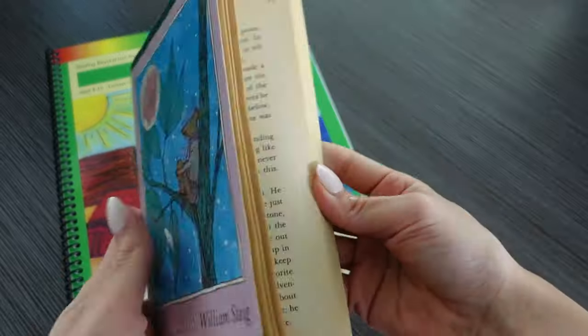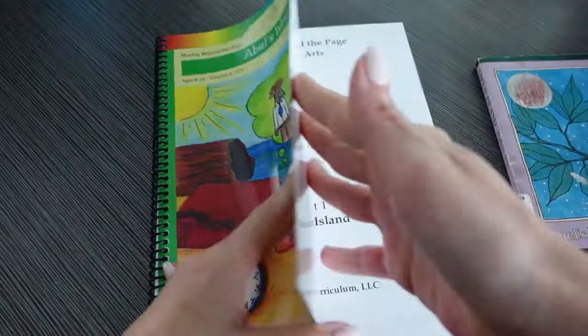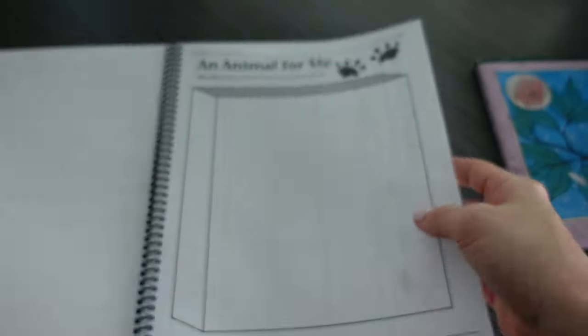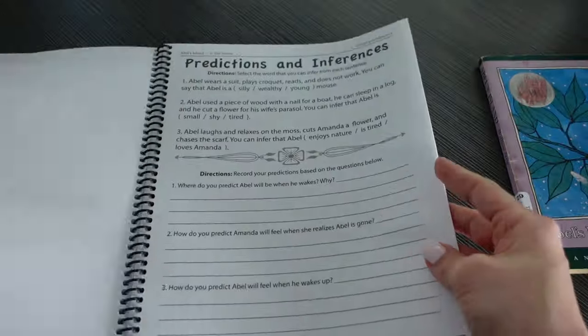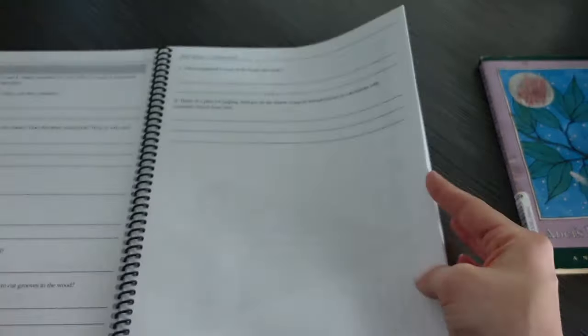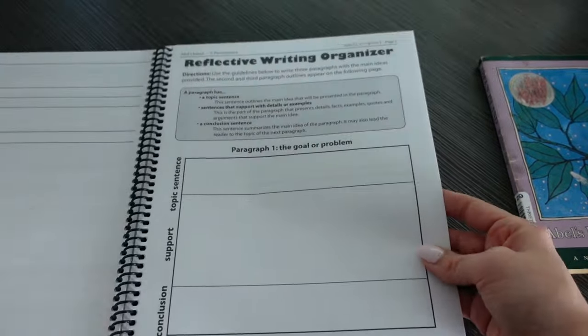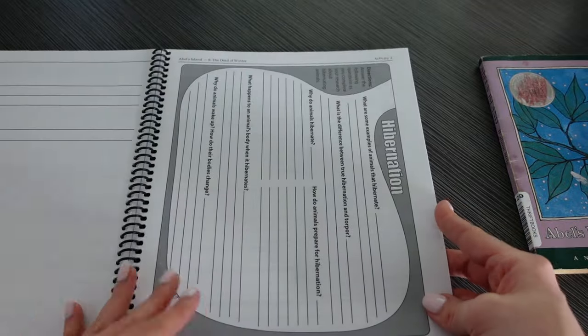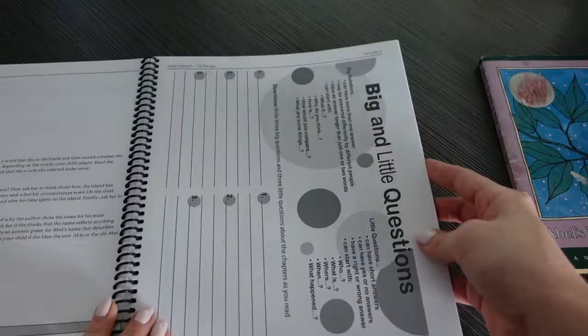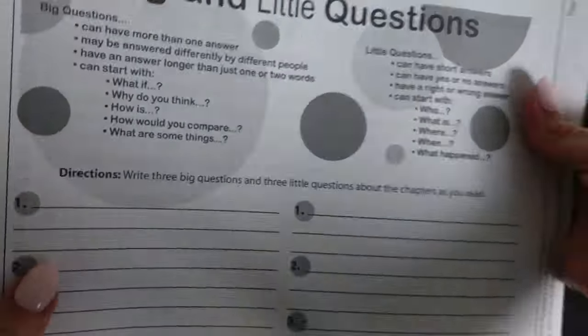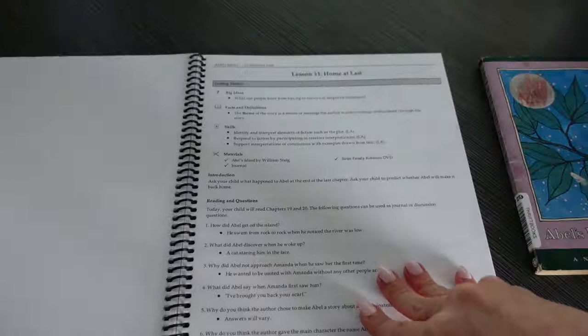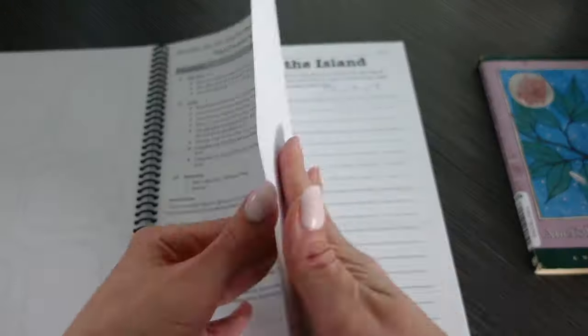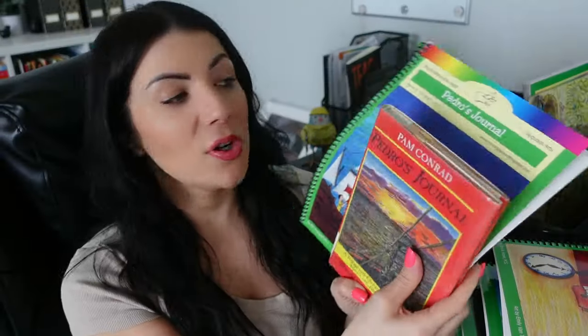The next book is Abel's Island. This one we're talking about natural resources, more vocabulary, parts of a boat. We're learning about the characters. We're measuring. We are doing more writing graphic organizers. We have rubrics in here. We have more vocabulary. We have animal adaptations, hibernations, parts of speech, ability to change, bubble maps, final project, your own deserted island. There's a rubric. There are little handy guides on how to complete that project.